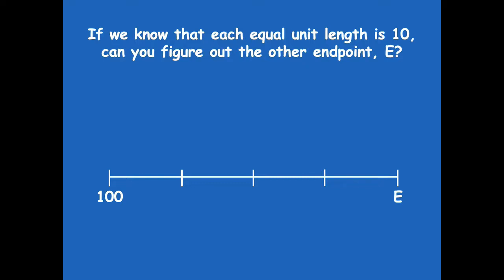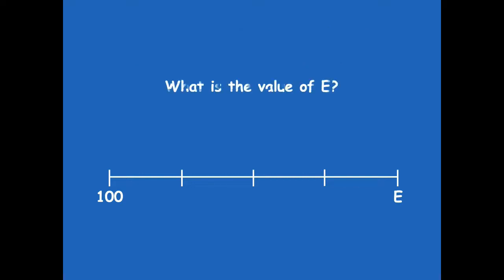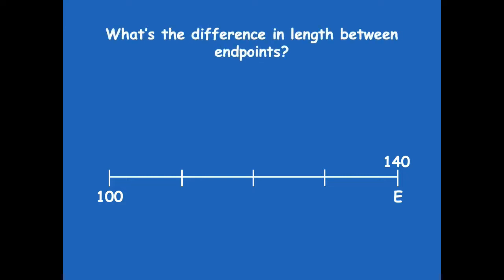All right, friends. What is the value of E? It's 140, because I can skip count along: 100, 110, 120, 130, 140. What's the difference in length between the endpoints? The difference between 100 and 140 is 40 — we can use subtraction: 140 minus 100 equals 40.